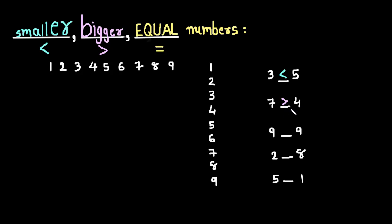Friends, here you can see we have a hint to remember which symbol to use. Here this symbol is open towards 5, and here the mouth of this symbol is open towards 7. So it is easy to remember — put the symbol so that the mouth is open towards the bigger number.